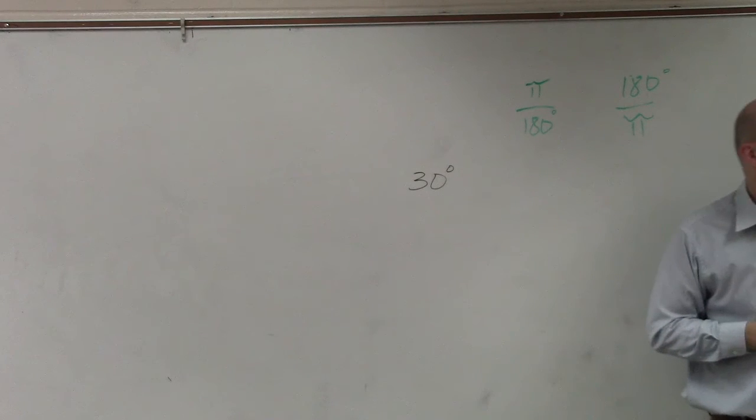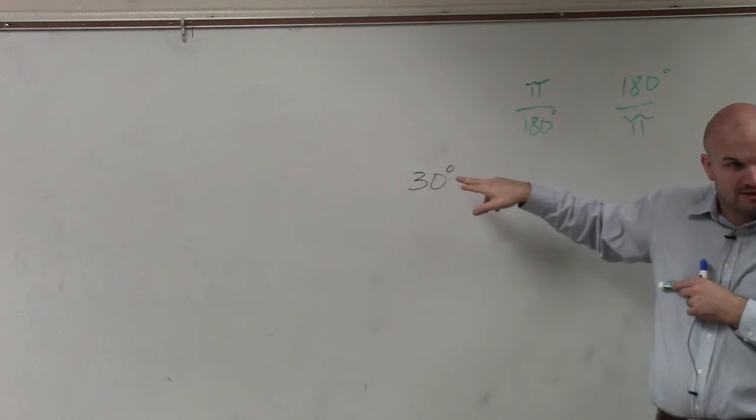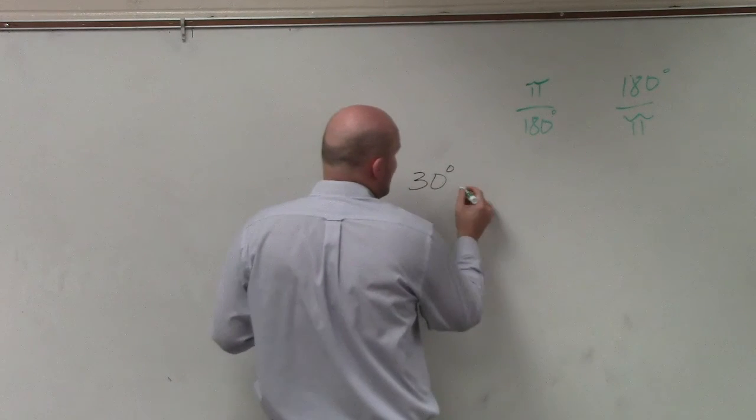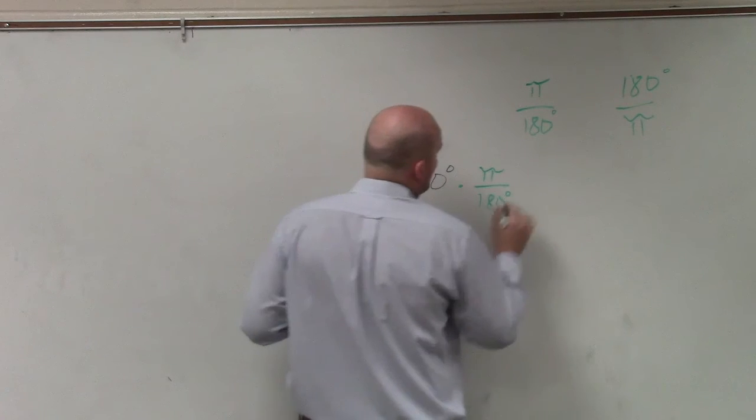If I want to take a number and I want to rewrite it in radian format, that means I do not want any more of these little degrees, right? So what I'm going to do is I'm going to multiply this by pi over 180 degrees.